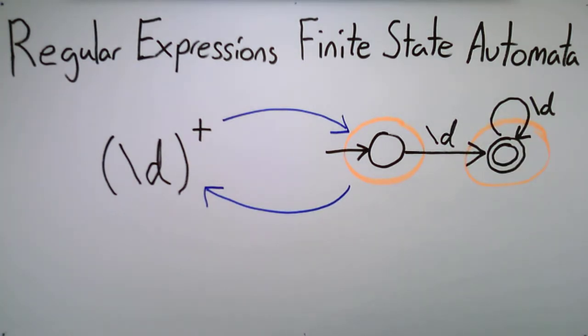You may notice that in this automaton there is no transition for anything other than a digit. We could include these other transitions by introducing a trap state, as our regular expression only allows digits in its language. But usually, this is left out for simplicity.